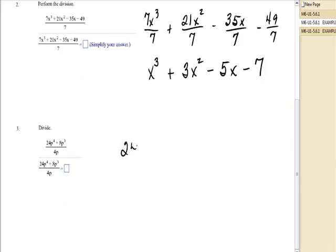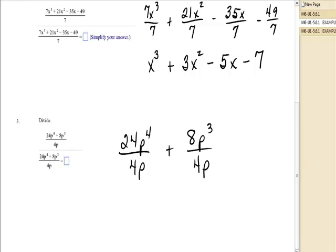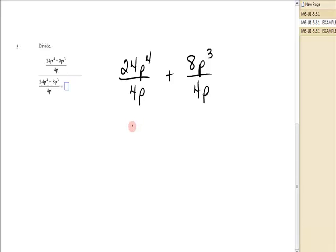Next one, I've got 24p to the 4th over 4p plus 8p to the 3rd over 4p. That will give me 6p to the 4 minus 1 is 3, plus 8 divided by 4 is 2p to the 3 minus 1, which is 2. And that's all there is.